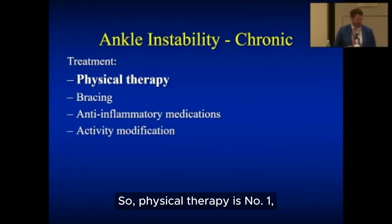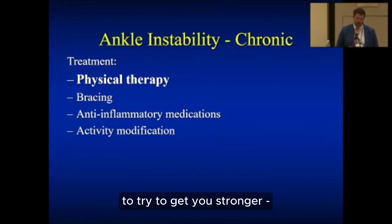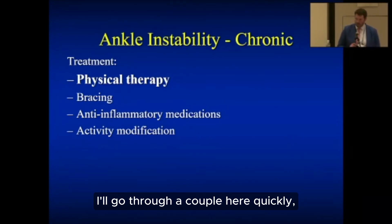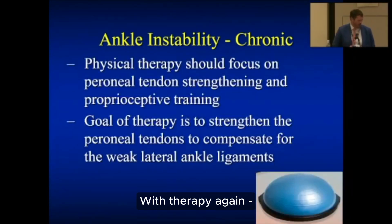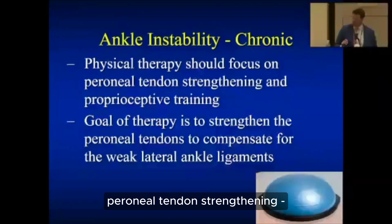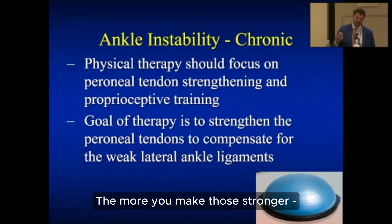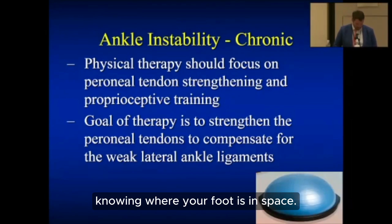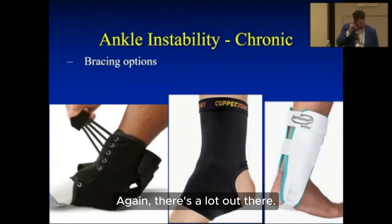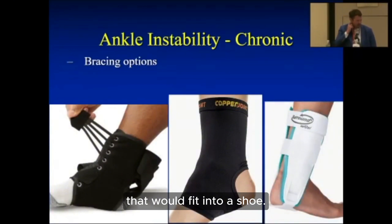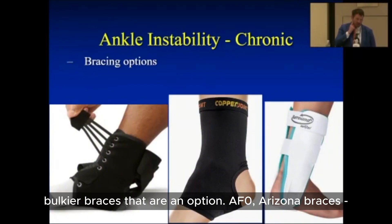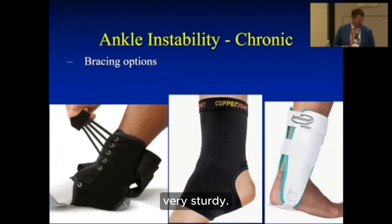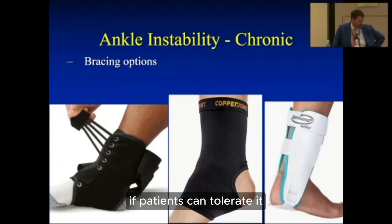Physical therapy is number one, two, and three for chronic ankle instability — getting with a good therapist to get stronger and address core strength. Peroneal tendon strengthening is key; the peroneal tendons on the outside of the ankle act as a secondary stabilizer, and making them stronger helps mitigate instability. Proprioceptive training — knowing where your foot is in space — is also critical. For bracing, I usually start with something lighter that fits into a shoe. Larger braces like AFOs or Arizona braces are options for patients who can't or won't have surgery or are quite debilitated.